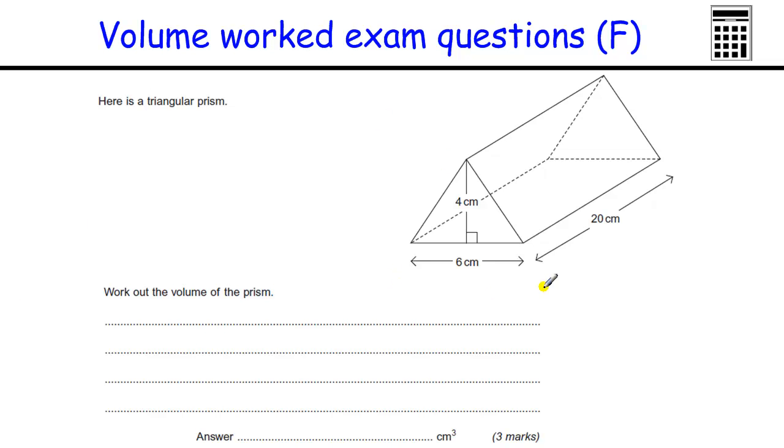OK. Triangular prism. Standard grade C question. With a prism, you've got to work out the area of the end. In this case, the triangle. So the area of the triangle is base times the height divided by 2. The base is 6. The height is 4. We know that's the base and the height because they're usually separated by a square to show that they're right angle. So we've got 6 times 4, which is 24, divided by 2, which is 12.